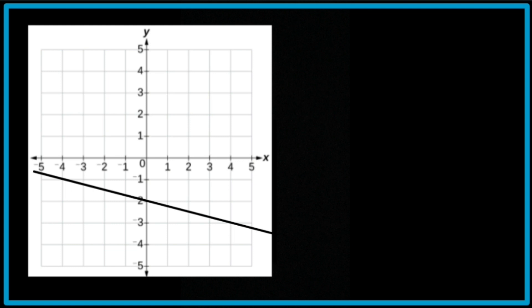Moving on to the final example now. So as you can see, it's a negative gradient as the slant is going the opposite way. So it's going to be y equals negative mx. And you can see the line cuts through the y-axis at negative 2. So negative 2 there.